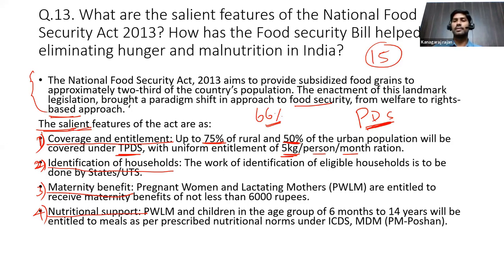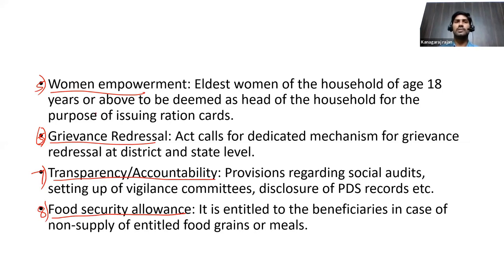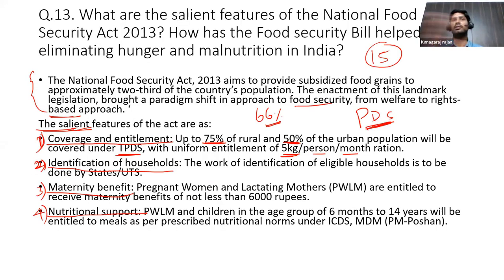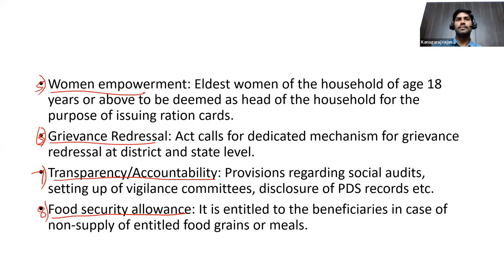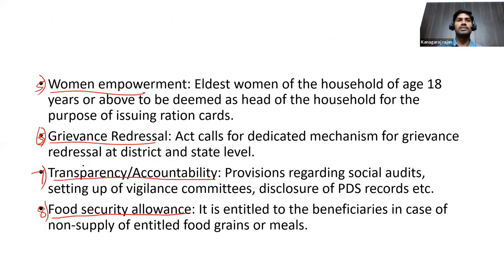The salient features include: coverage and entitlement, identification of households, maternity benefit, nutrition support, women empowerment, grievance redressal mechanisms, transparency and accountability, and food security allowance. With almost eight points in one and a half pages, you can psychologically impact the examiner and there is a higher chance of getting maximum marks.